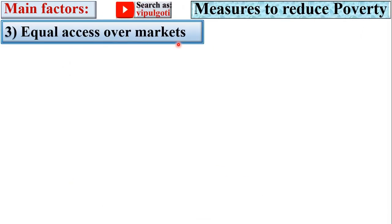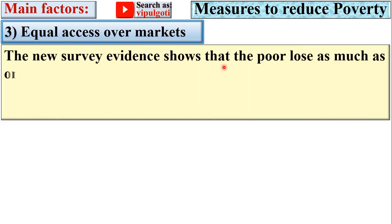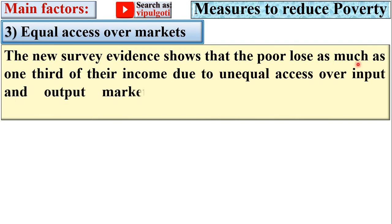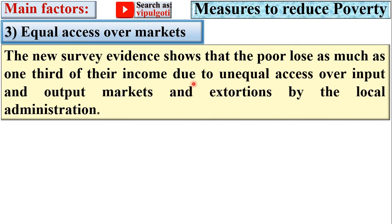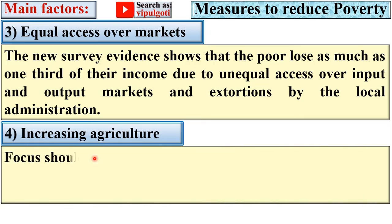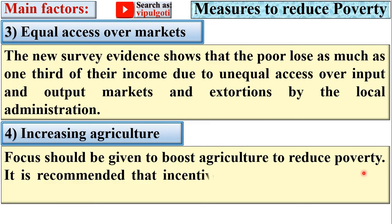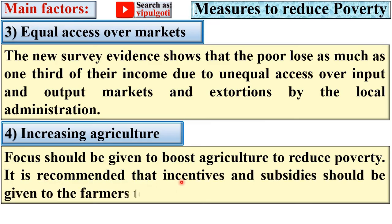Next, equal access over markets. New survey evidence shows that the poor lose as much as one-third of their income due to unequal access over input and output markets and extortions by the local administration. Next, increasing agriculture. Focus should be given to boosting agriculture to reduce poverty. It is recommended that incentives and subsidies should be given to farmers to produce more output.